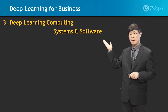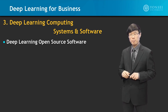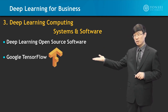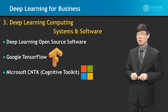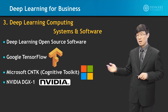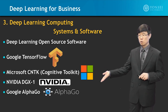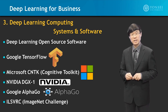In Chapter 3, we'll look into deep learning computing systems and software, where deep learning open source software will be examined. We'll look at Google TensorFlow, the Microsoft Cognitive Toolkit, the NVIDIA DGX-1 system, Google AlphaGo, and the ImageNet Challenge, the ILSVRC.